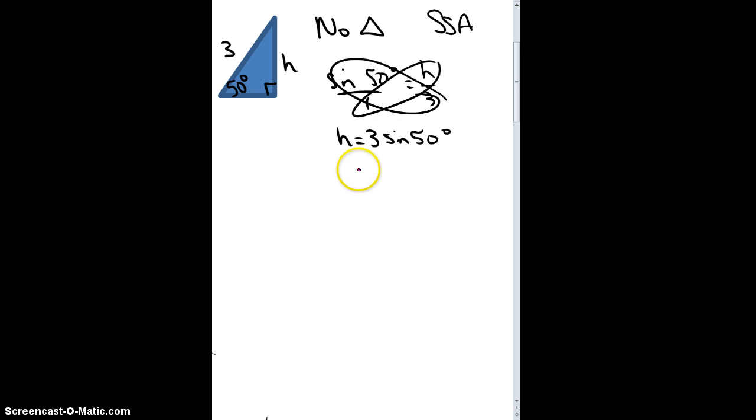And so make sure you're on degrees, and so I get 2.298, and again, the unit could be inches, feet, whatever our unit is on this triangle.